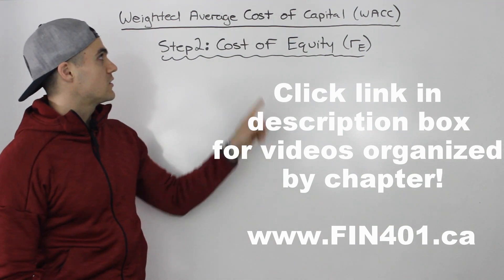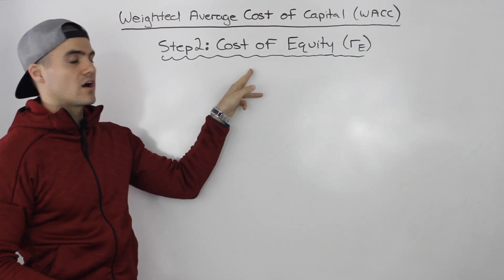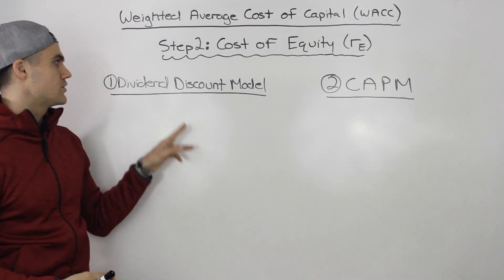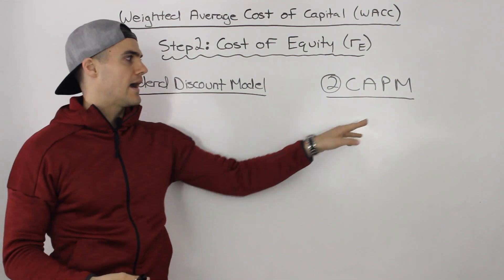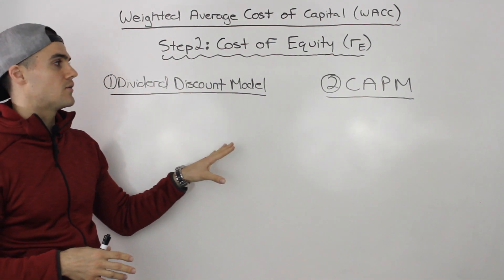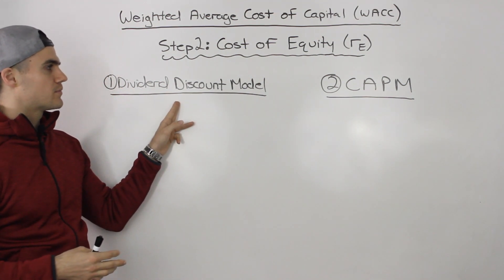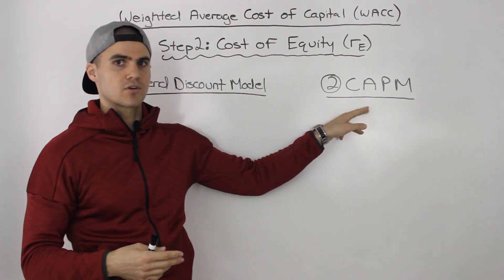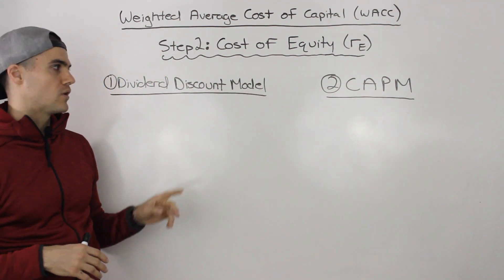Moving on to the next step for finding the weighted average cost of capital, step two is to find the cost of equity. To find the cost of equity, you're going to use one of two methods: the dividend discount model or the capital asset pricing model. I'll do a brief review of both in this video, but for a more in-depth review, go back to the stocks chapter for the dividend discount model and the return versus risk chapter for the capital asset pricing model.